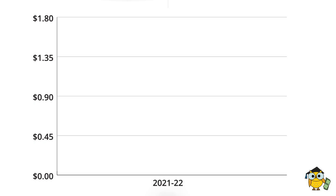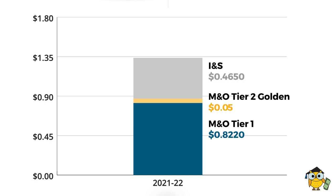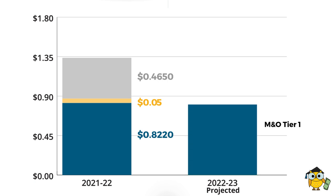Let's take a closer look at Leander ISD's tax rate. The current rate for 2021-22 has an M&O tier one rate of 0.8220, five M&O tier two golden pennies, no M&O tier two copper pennies, and an INS rate of 0.4650. Looking ahead, the M&O tier one rate will reduce in size because of something called compression — the state imposed a limit to the amount of additional revenue generated from the M&O tax rate on rising property values by requiring school districts to lower the M&O tax rate as values increase. So in Leander ISD, with skyrocketing property values, our M&O tier one rate is projected to compress down to the state's minimum of 0.8046.